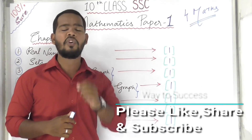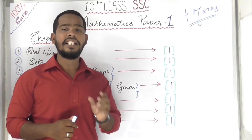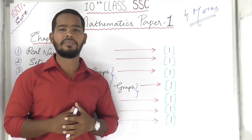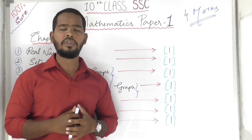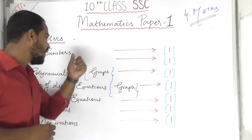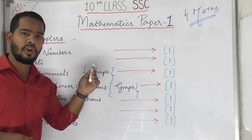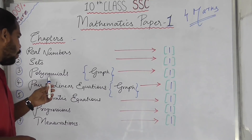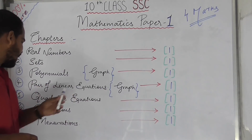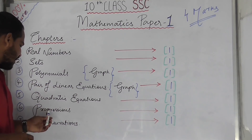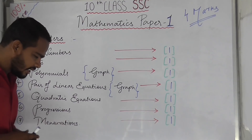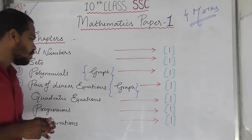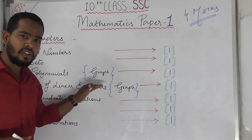We have 7 chapters in the 10th class paper 1 mathematics. The important chapters are: real numbers, sets, polynomials, pair of linear equations, quadratic equations, progressions, and mensuration.